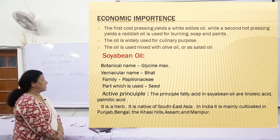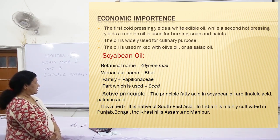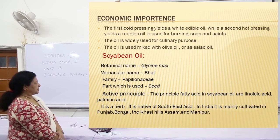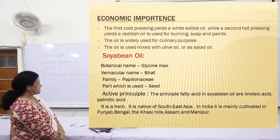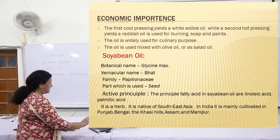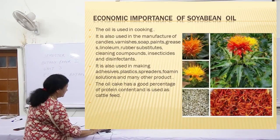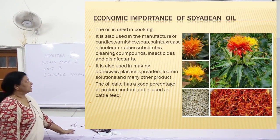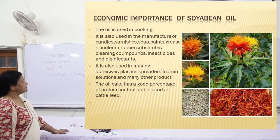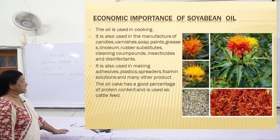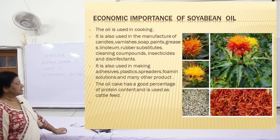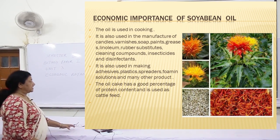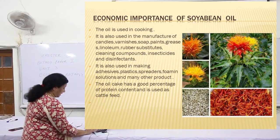Coming to soya bean oil. Botanical name: Glycine max. Vernacular name: bhat. Family: Papilionaceae. The part used is the seed. The principal fatty acids in soya bean oil are linoleic acid and palmitic acid. It is a herb grown in Southeast Asia; in India, it is mainly cultivated in Punjab, Bengal, Khasi Hills, Assam and Manipur. Economic importance: this oil is used for cooking, manufacture of candles, varnish, soap, paints, grease, linoleum, rubber substitutes, cleaning compounds, insecticides and disinfectants. It is also used in making adhesives, plastics, spreading agents, foaming solutions and many other products. The oil cake has a good percentage of protein content and is hence used as cattle feed.